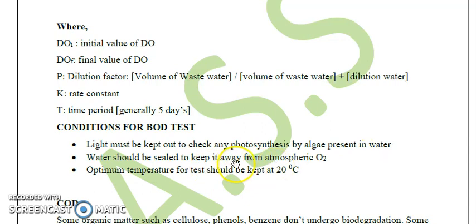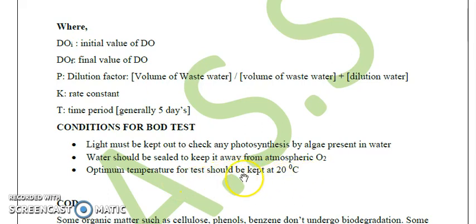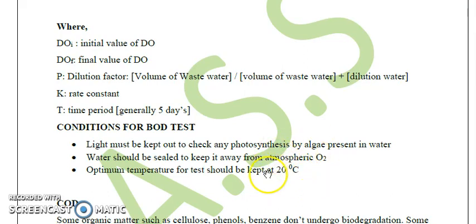Water should be sealed to keep it away from atmospheric oxygen, preventing contamination of our reading. The temperature required for the BOD test is 20 degrees Celsius (293 Kelvin). This is the optimum temperature for the metabolism of microorganisms present in the water, whereas for the human body most microbes and enzymes work better at 25 degrees Celsius.